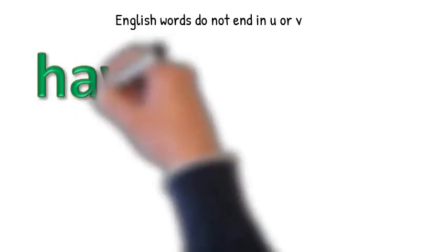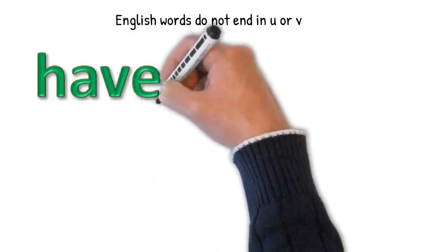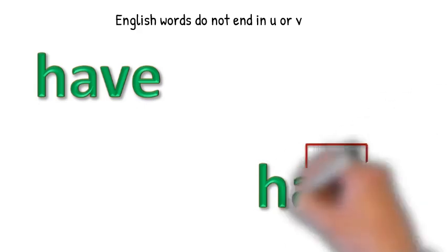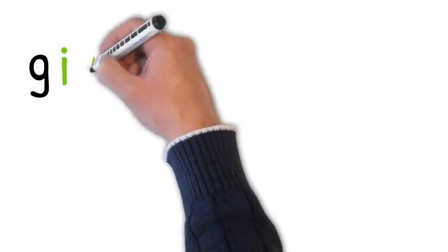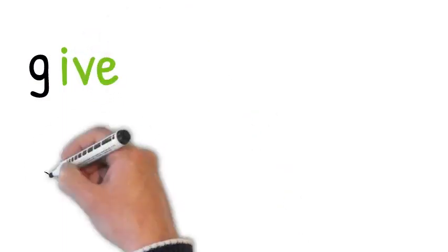But the silent E has more than one job. In the word have, its job is not to make the vowel long. If it was, this would say have. The job in this word is that the E is there because English words are not allowed to end in U or V. So we put it there so that the V does not break the rule and be the last letter of that word. So don't get confused when you see this E and call that have.